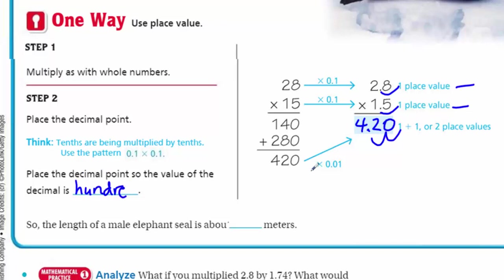Place the decimal point so the value of the decimal is hundredths. We need to put that 420 in there. Because we have two place values here, one here, one there, that's making our 2/10, it's two place values. So we're multiplying by 1/10 and another tenth. Well, 2/10 is 100 hundredths. So I need to move the decimal place two place values to the left, and I end up with 4.20. So the length of the male elephant seal is about 4.2 meters.